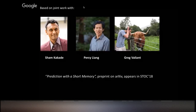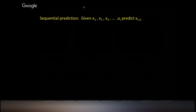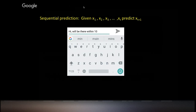I'm Sham Gadrea Gedov, and my advisor is Greg Valiant at Stanford. The standard sequential prediction setting: you're given outputs x1, x2, up to xt, and your goal is to predict xt plus 1. You can think of a bunch of applications, but a good one to have in mind is language modeling.